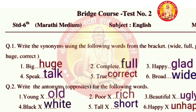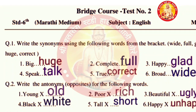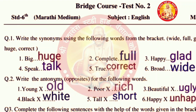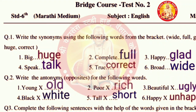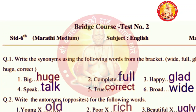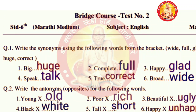Question number 2: write the antonyms, meaning opposites. Young - old, poor - rich, beautiful - ugly, black - white, tall - short, happy - unhappy. Write down all the spellings correctly in your answer papers.